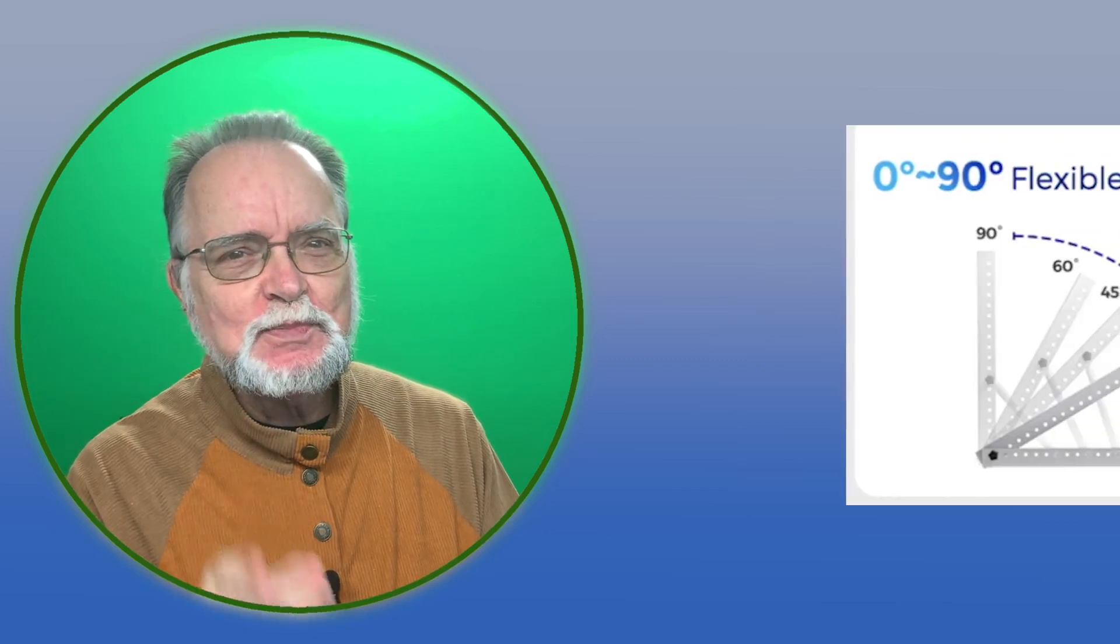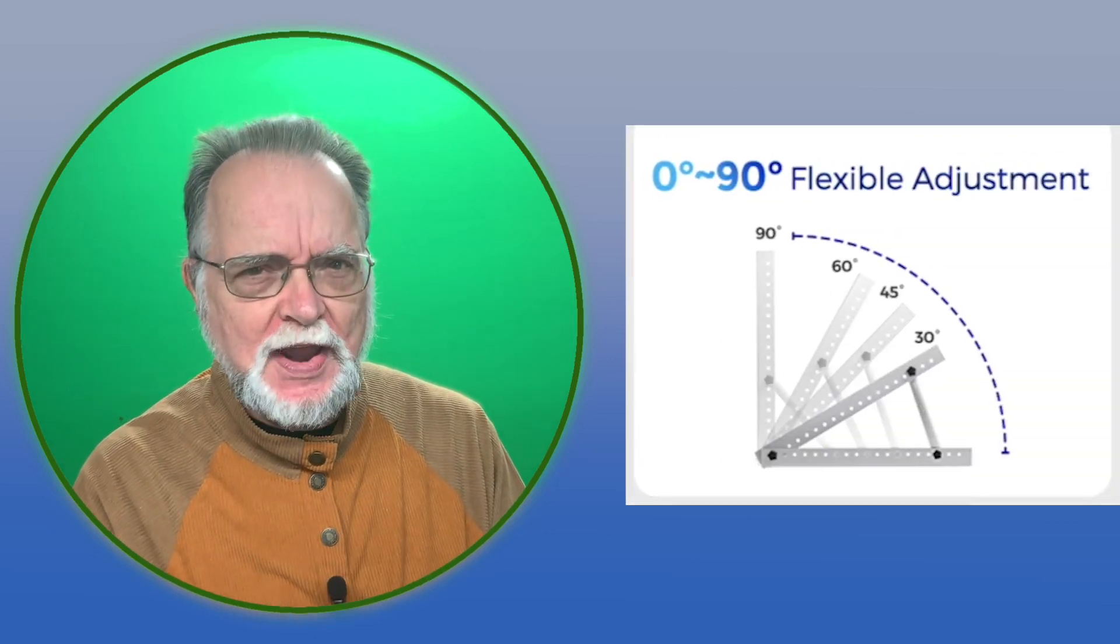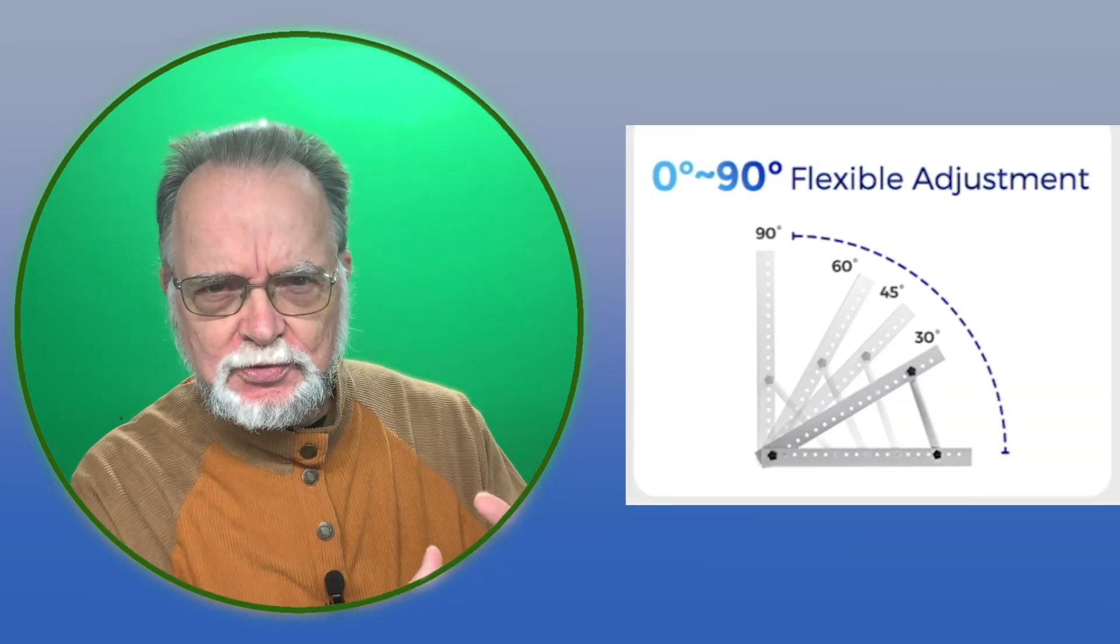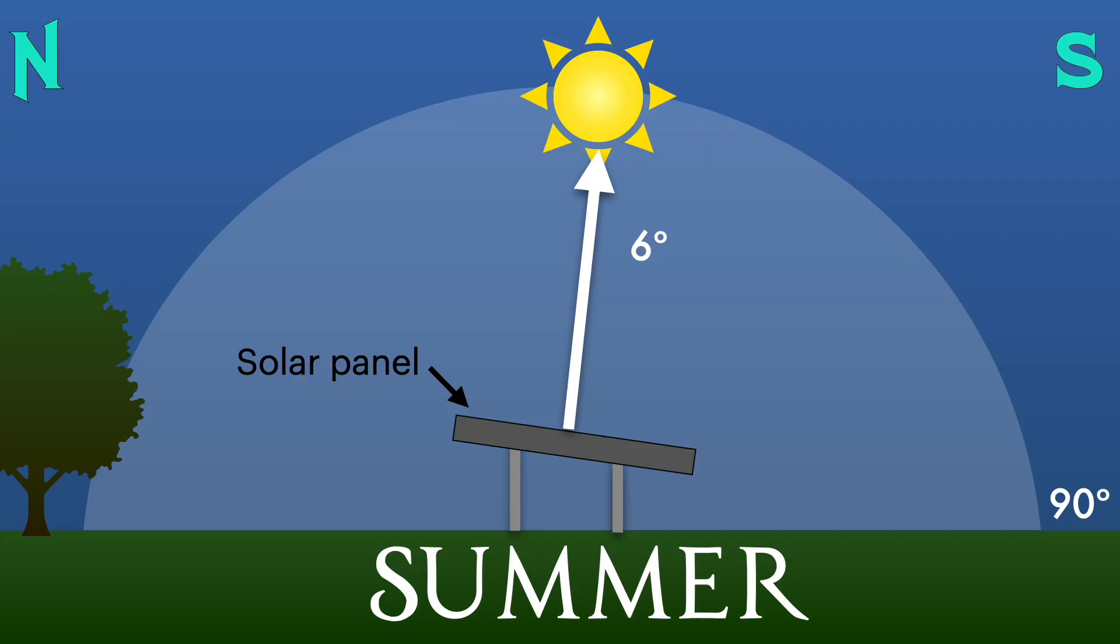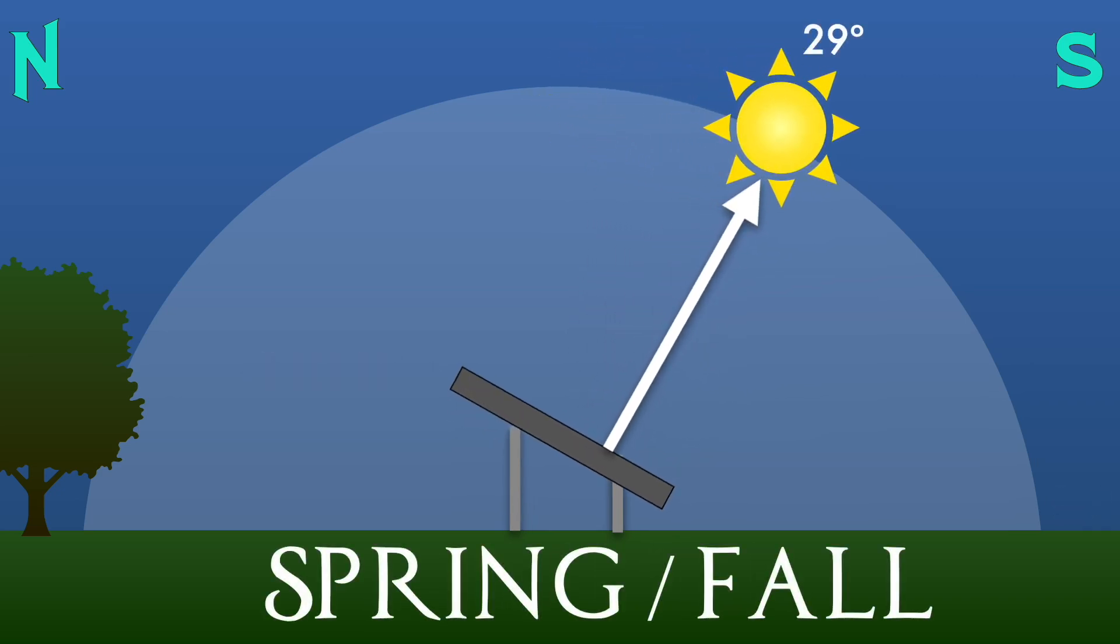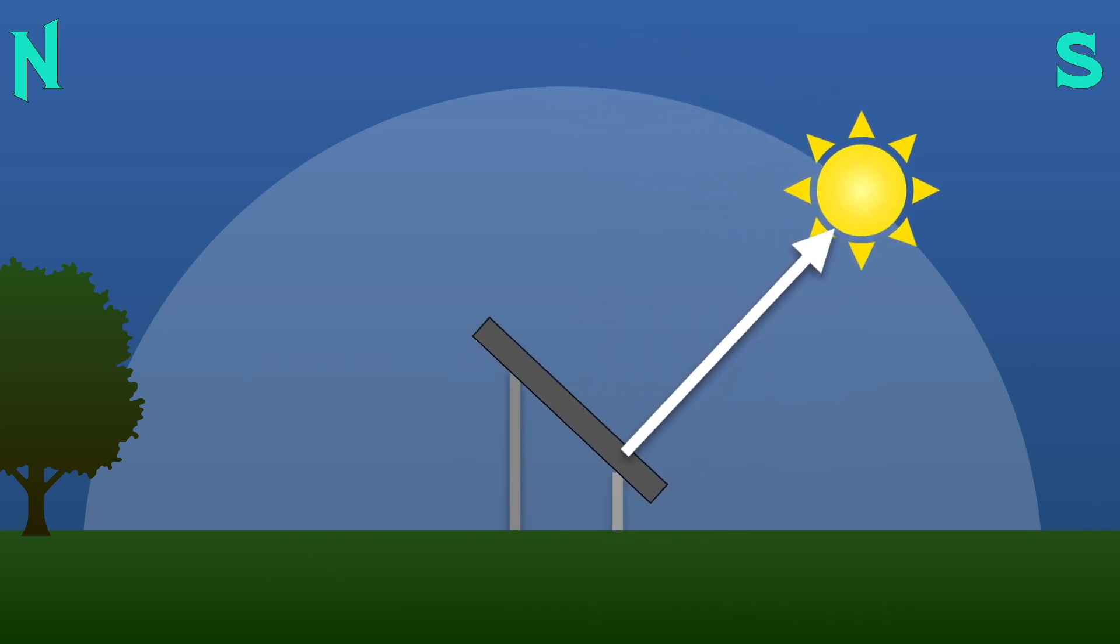You can get even more gains by using a variable tilt rack mount and changing the tilt of the panels for each season. So in the summer my panels would be aimed at 6 degrees, in the spring and the fall at 29 and in the winter way down at 52.